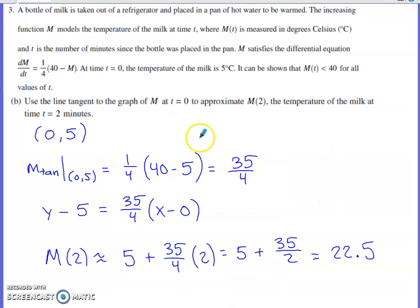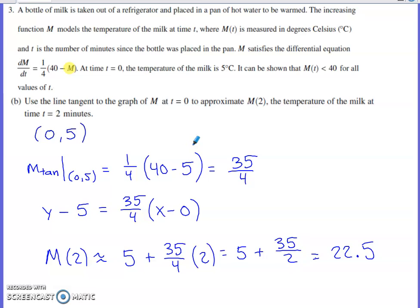Part B asks for a tangent line approximation based at t equals zero to approximate M(2) — the temperature of the milk at time two. The initial point is (0, 5). We need the slope of the tangent line, so we evaluate the derivative at (0, 5). The biggest mistake to watch for is plugging zero in place of M rather than five. This derivative depends on the dependent variable — the M coordinate, which is five — not on t.